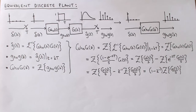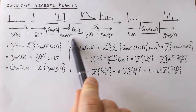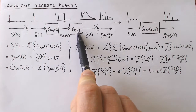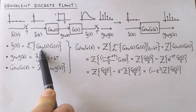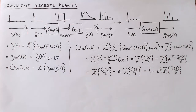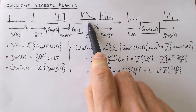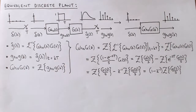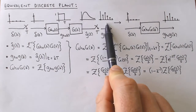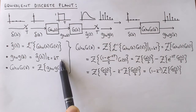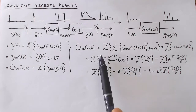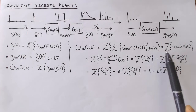To determine the equivalent discrete plant model we start with the continuous time part. The transfer function of the combination of the zero-order hold and continuous plant is simply the product of their respective transfer functions. The continuous impulse response is then the inverse Laplace transform of that product. To obtain the discrete impulse response we sample the continuous impulse response, and then apply the Z-transform to get the discrete transfer function. These steps can be written in one line and abbreviated accordingly.